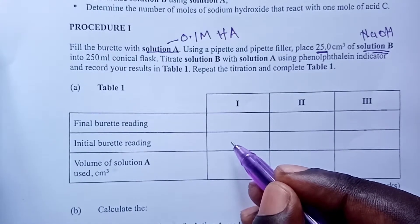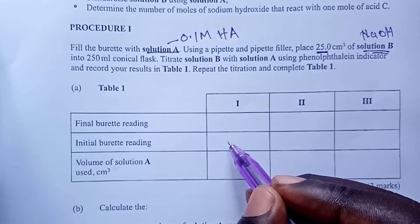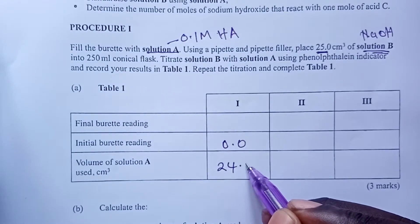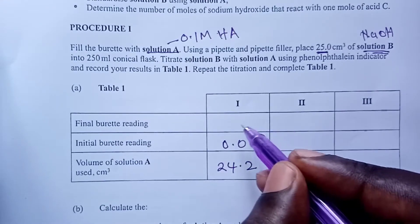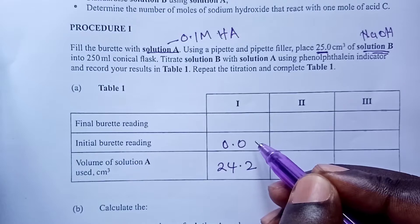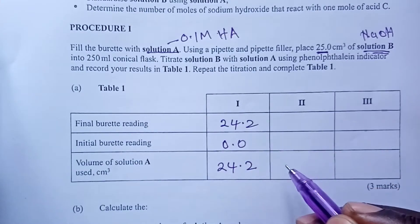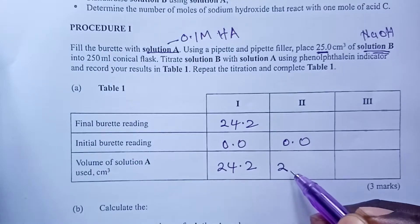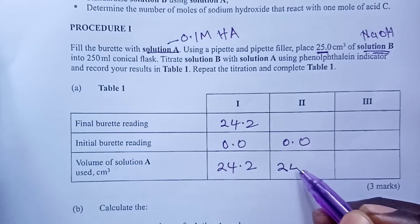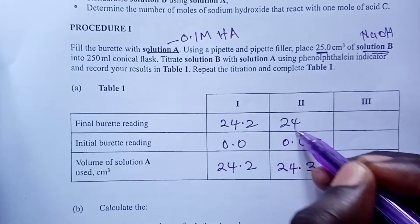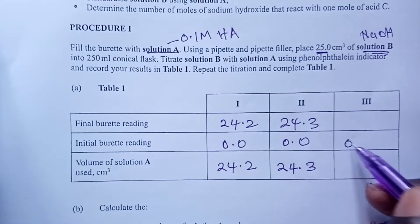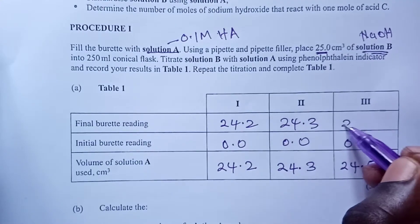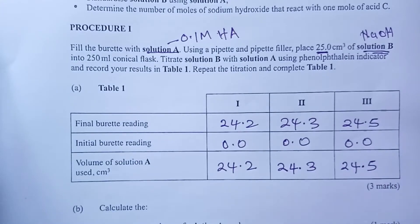So it is a discussion so we will assume that the student got these volumes. So let's suppose the student got these volumes for our titration one. So we have 24.2 in the first titration. In the next titration, the student got 24.3. And in the last titration, let's assume the student got 24.5.